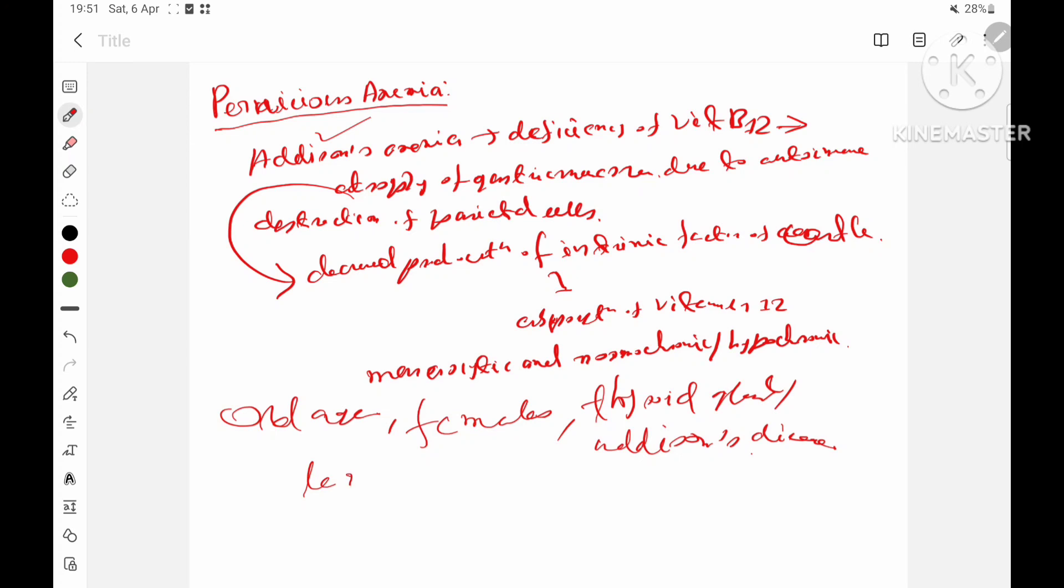The characteristic feature of this type of anemia is lemon yellow color of the skin, which is due to anemic paleness and jaundice, and red sore on the tongue.